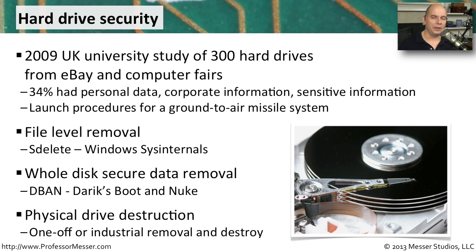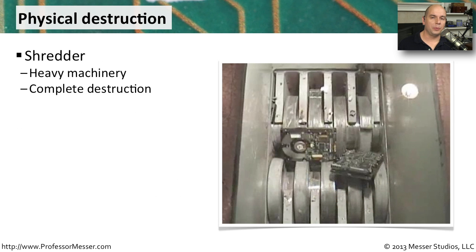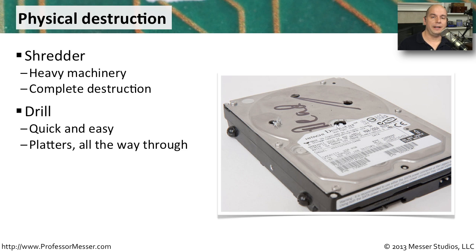If you really want to remove the information and make it so that nobody can access it, you can physically destroy the drive. Here's an example of a large piece of machinery that grinds up drives and shreds them into tiny pieces of metal. You can also buy a shredder from China that will grind anything to a pulp. Another easy option is a hand drill or drill press — simply drill through the drive all the way through to the other side, making sure you drill through where the platters are, and no one will be able to use the drive.